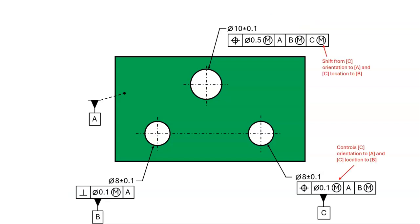Now we look back at the feature control frame for our considered feature and we notice that the datum C reference also has an MMB modifier. Therefore, we can have shift at datum feature C. When we look to the left of the datum C reference and look at the higher precedence datums, we see that datum feature A is primary and datum feature B is secondary. Therefore, our shift calculation must include a geometric tolerance that controls the orientation of datum feature C relative to datum A and the location of datum feature C relative to datum feature B. We look at datum feature C and we see that it has a tolerance of position that controls the orientation relative to A and the location relative to B. We must include this tolerance of position in our calculation for shift at datum feature C.